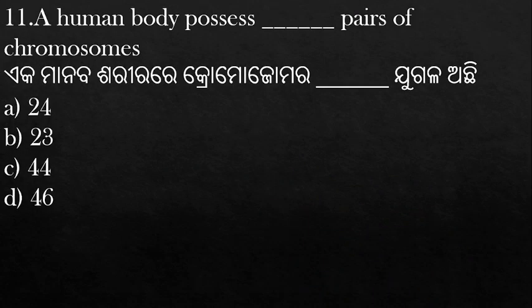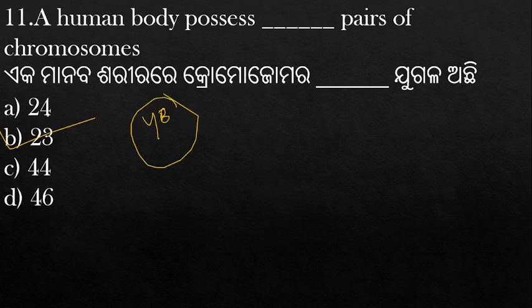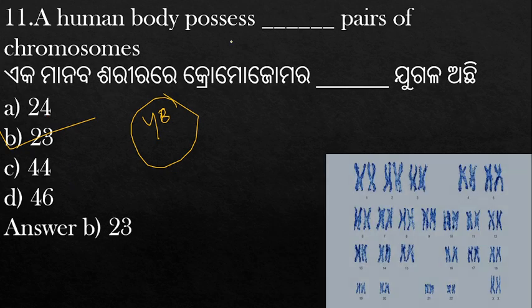A human body possesses how many pairs of chromosomes? The total is 23 pairs of chromosomes.